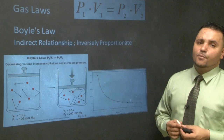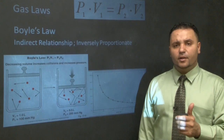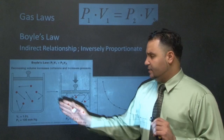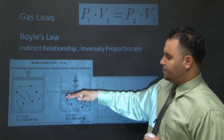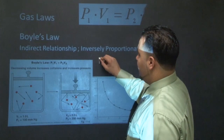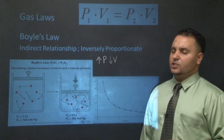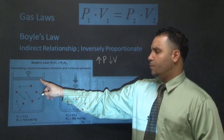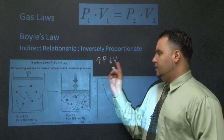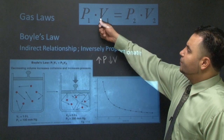Boyle's Law was established about 200 years ago. Boyle had gas in a container with a piston and compressed it. He noticed that as he increased the pressure, the volume decreased — an inverse or indirect relationship. The space inside represents volume; push the piston down and pressure increases as volume decreases. The formula is P1 × V1 = P2 × V2.